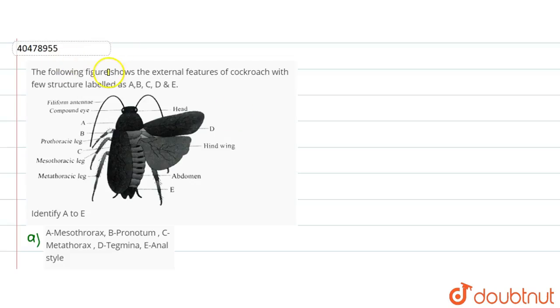In this question, the following figure shows external features of cockroach with few structures labeled as A, B, C, D and E. Here we have a structure given, which is a member of the phylum Arthropoda. We need to tell which structures are given here.